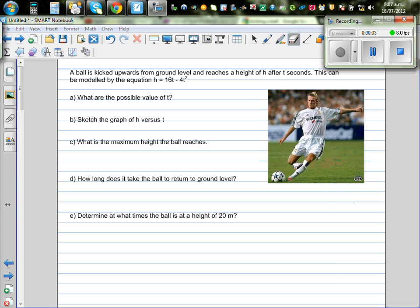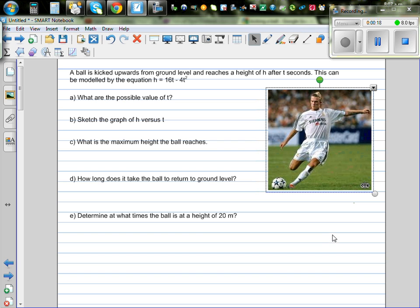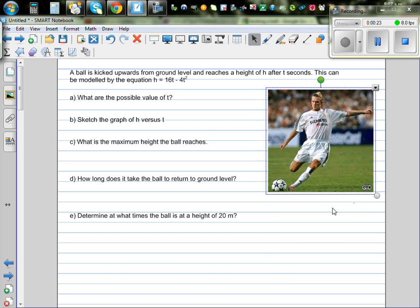A ball is kicked upwards from the ground level and reaches a height h after t seconds. This can be modeled by this equation h is equal to 16t minus 4t squared. This image I've Googled. So this is a footballer, a well-known footballer. I can't recognize his face. You might be knowing he's a great footballer, probably. So this footballer is kicking this ball and the path of the ball can be modeled by this equation, which is h is equal to 16t minus 4t squared.